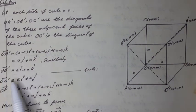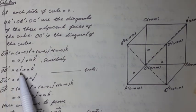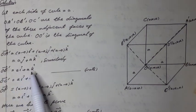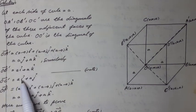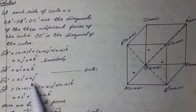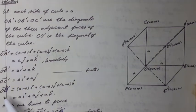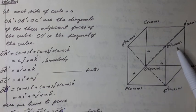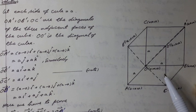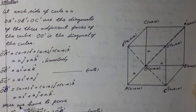Similarly, vector OB' equals Aî + Ak̂. Vector OC' equals Aî + Aĵ. The diagonal vector OO' equals (A-0)î + (A-0)ĵ + (A-0)k̂, which equals Aî + Aĵ + Ak̂.